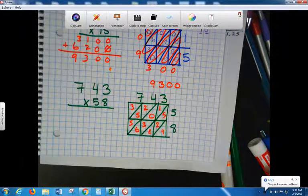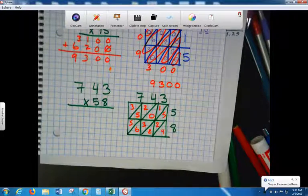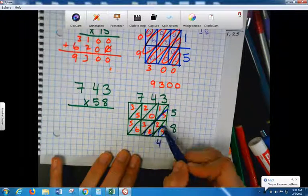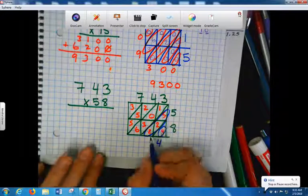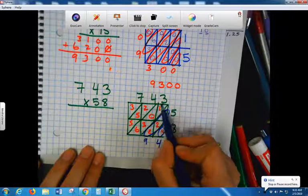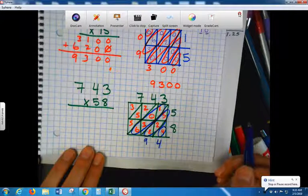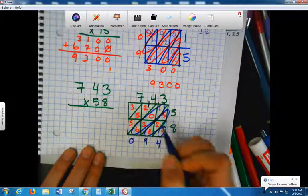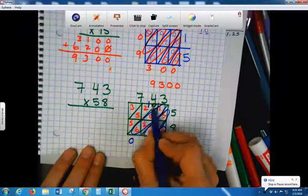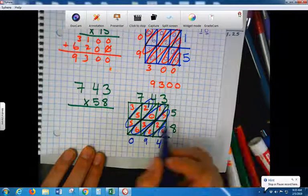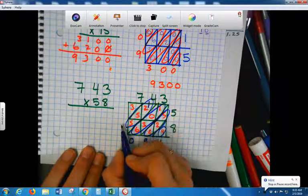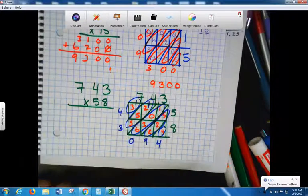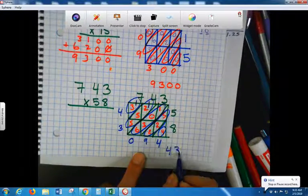Now to get our final answer and to see if the people who did this got it right, let's add. So you add a diagonal, that gives you just 4. Now we add this diagonal, 9. Good. Add this diagonal, 10. So what do you do? You put the 0 and you carry the 1. What's this diagonal? 12. With that 1? 13. Carry the 1. What's this diagonal? 4. So what's my answer? 4, 3, 0, 9, 4.